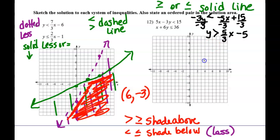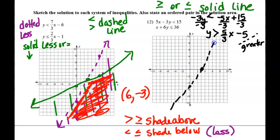Solid or dotted for that one? It is a dotted line. I always look back at the original to make sure I didn't lose an equal sign somewhere. It is a greater than, which means we're going to shade above the line. Start down at negative 5, go up 5 and over 3. It was a greater than, so we flipped it to become a greater than — we want the points above that line.